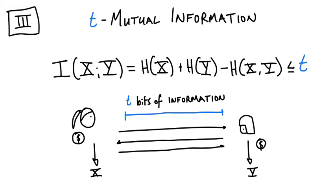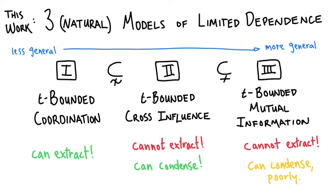This again has a natural interpretation in terms of Alice and Bob generating protocols: this corresponds to sources that Alice and Bob can sample while exchanging at most T bits of information about their respective sources. We have these three models, and I claim the left is the least general and the right is the most general. Let's dive into the relations between the models and our results on extraction.